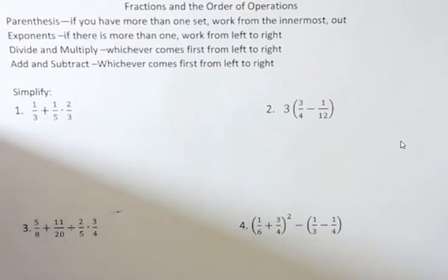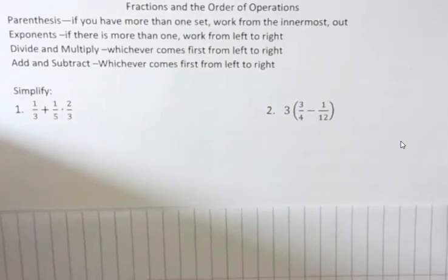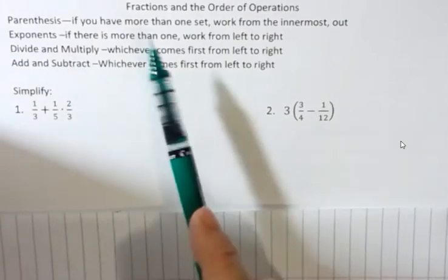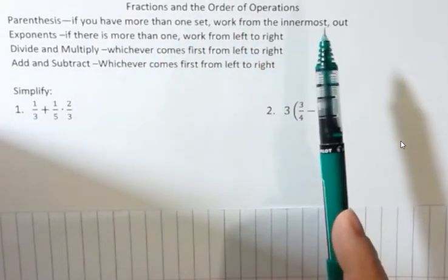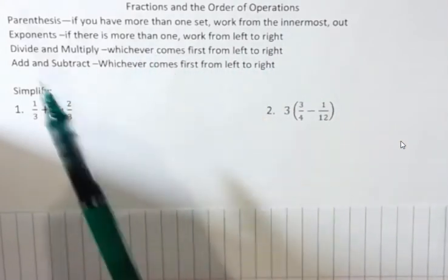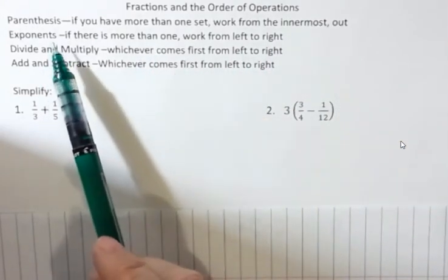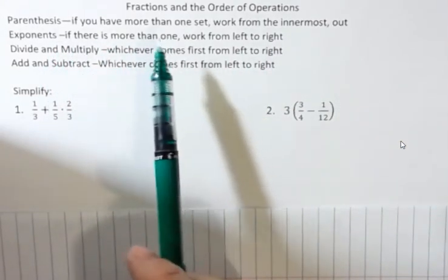I'm going to remind you about order of operations, but you should remember that from when we did them with whole numbers. Parentheses, if you have more than one set, work from the innermost out. Once you have gotten rid of your parentheses, you work on the exponents. If there's more than one, work from left to right.